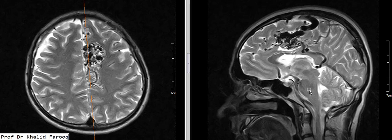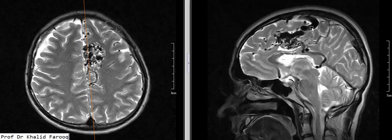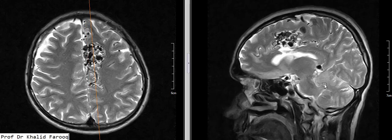We can see this vermiform low signal intensity area involving the medial portion of the left parietal lobe just above the corpus callosum. This is basically an AVM which is being supplied by vessels from the anterior cerebral arteries and is being drained through cortical veins into the superior sagittal sinus and the vein of Galen, immediately below the splenium of the corpus callosum.